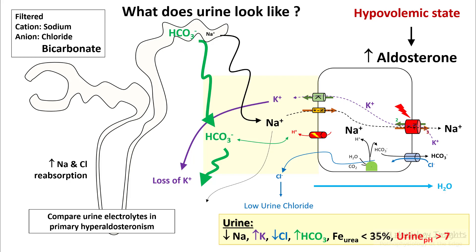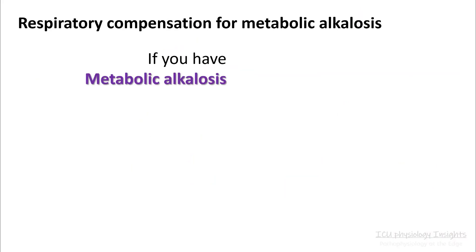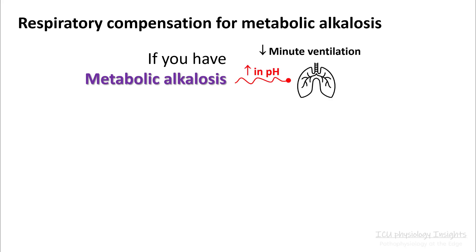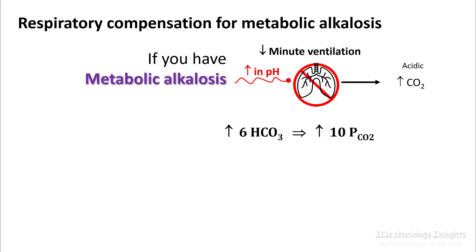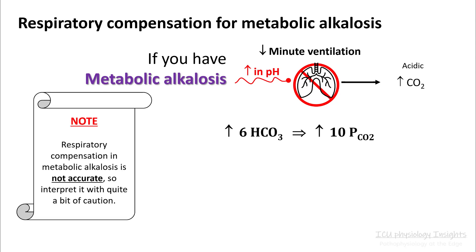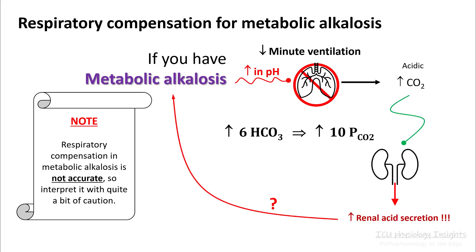Compare these urine findings with a patient with primary hyperaldosteronism so that you can get a better understanding. Metabolic alkalosis is compensated by respiratory means. If you have metabolic alkalosis your pH rises and you decrease your minute ventilation, resulting in CO2 retention and trying to normalize your metabolic alkalosis. A rise of 6 in bicarb usually results in an increase of 10 in pCO2. However, the respiratory compensation in metabolic alkalosis is not very accurate, so interpret it with quite a bit of caution, because CO2 itself increases adrenal acid secretion and this effect differs between patients, so this ratio cannot be used on all patients.